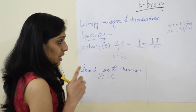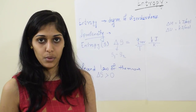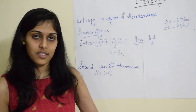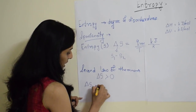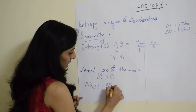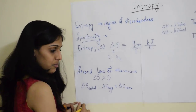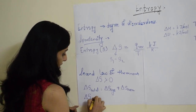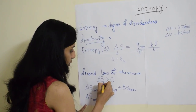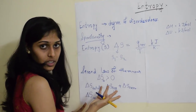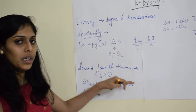In thermodynamics, there are two important terms: system and surrounding. The total entropy change is the combination of both. So delta S total equals delta S system plus delta S surrounding, which is also called delta S universe. Delta S total should be greater than 0 for the process to be spontaneous.